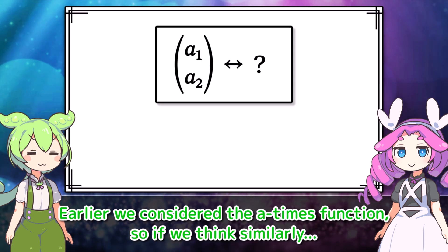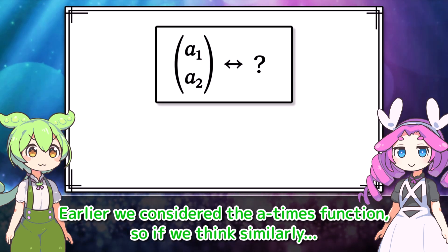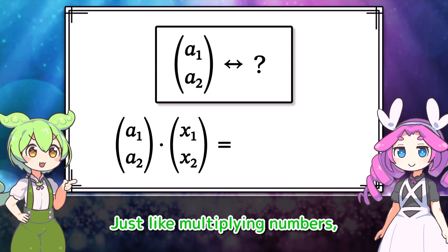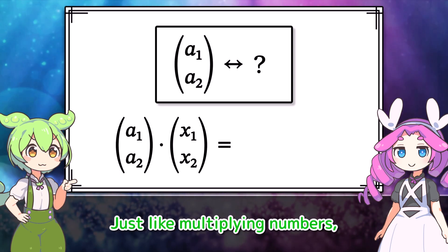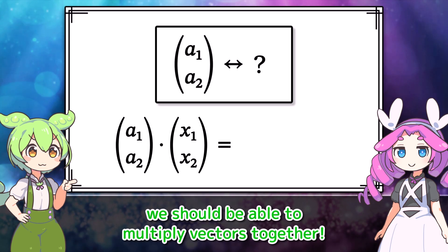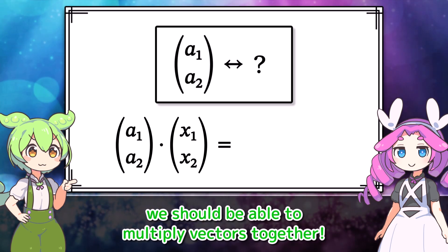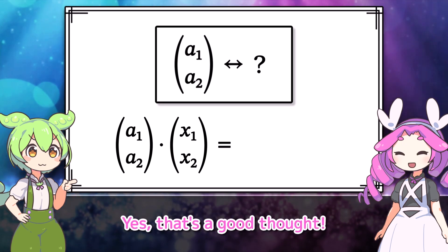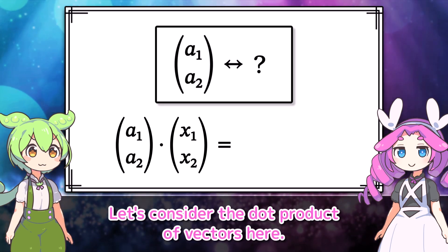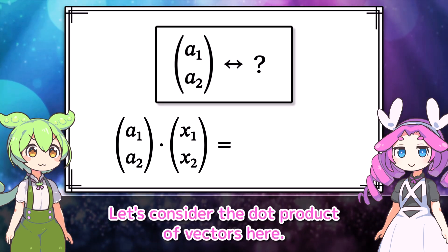So if we think similarly, just like multiplying numbers, we should be able to multiply vectors together. Yes, that's a good thought! Let's consider the dot product of vectors here.